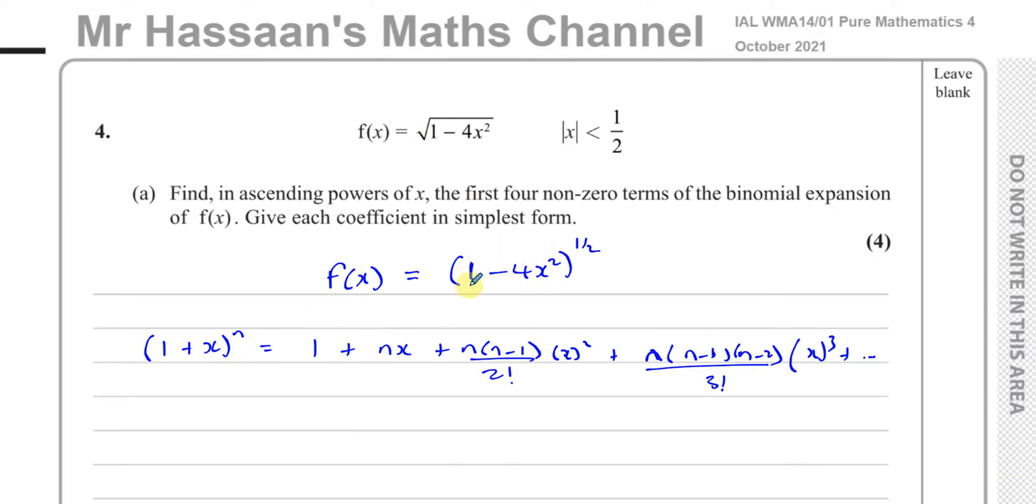But it must always say 1 here. In this question, they've been kind of easy on you, they kept this as a 1 here. If this wasn't a 1, we would have had to rewrite it so there's a 1 here. But because there's already a 1 here, there's no problem. We can just use the formula directly. If there was a 2 here, we'd have had to take 2 out from this and then continued. You can see examples if you look at the playlist for binomial expansion from P4.